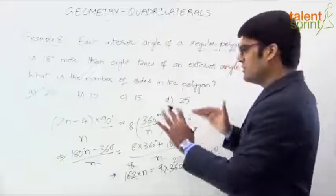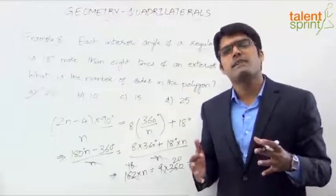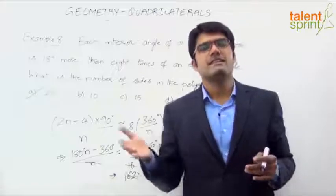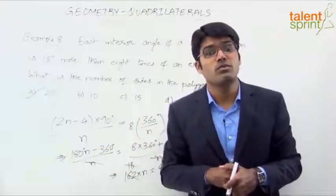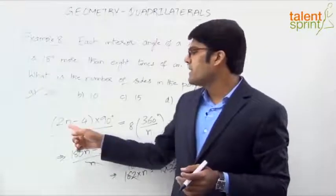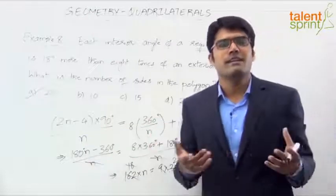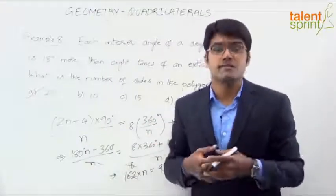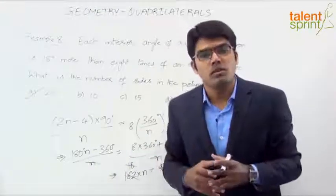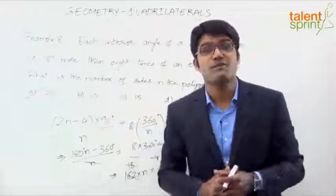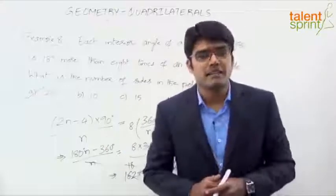As you have seen, it is all about using the right formula, framing the equation, and getting the required answer. Most polygon questions are simpler — for example, if an interior angle of 144 degrees is given, set (2n−4) × 90 / n = 144 and solve for n. The same applies for questions involving diagonals or exterior angles. Make sure you learn all the formulas.